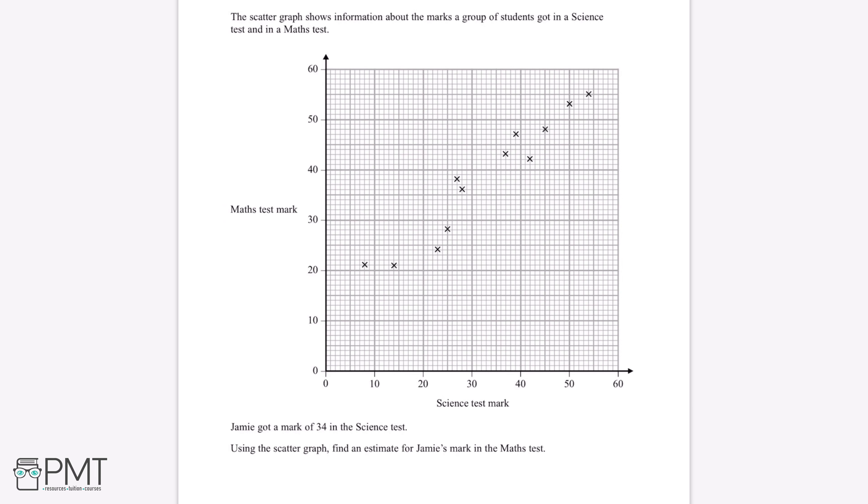The scatter graph shows information about the marks a group of students got in a science test and in a maths test. Jamie got a mark of 34 in the science test. Using the scatter graph, find an estimate for Jamie's mark in the maths test.